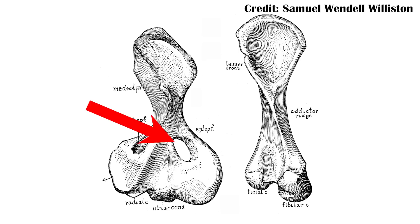Additionally, there's a weird hole that goes all the way through the humerus bone in lizards, which you don't see in other groups. Again, a shared characteristic that we're able to point at and go: these animals are related because they have this shared characteristic that we don't see in other animals.